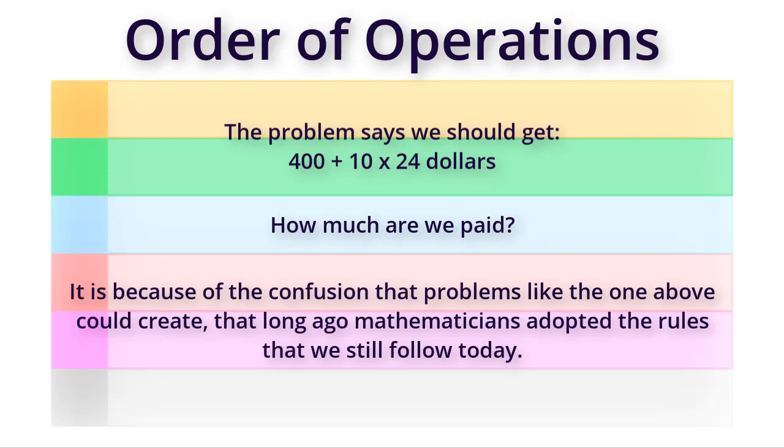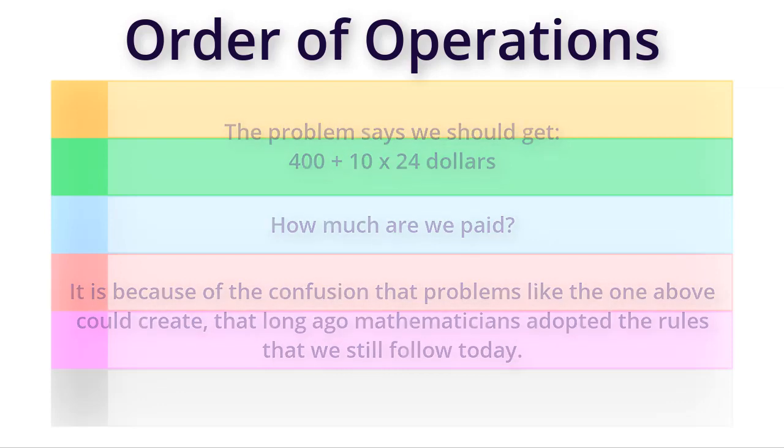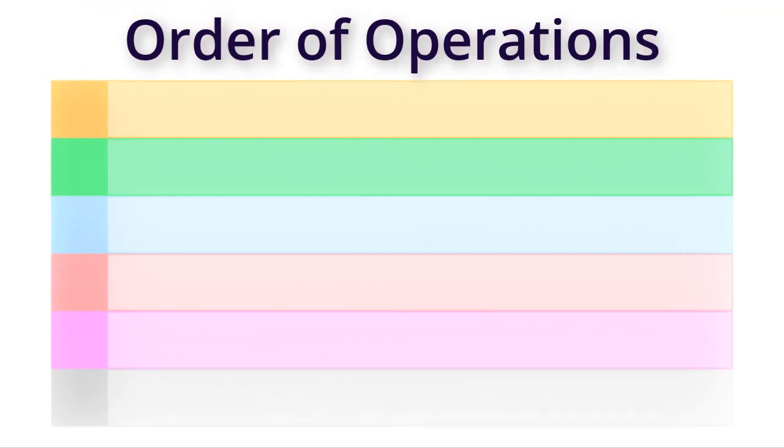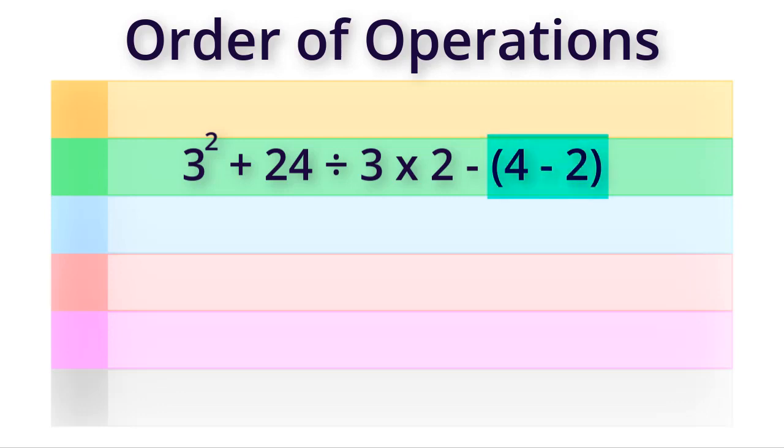This set of rules is called the order of operations. We will use the order of operations to solve the problem: three to the power of two plus twenty-four divided by three times two minus four minus two. Do the operation inside the parentheses first.